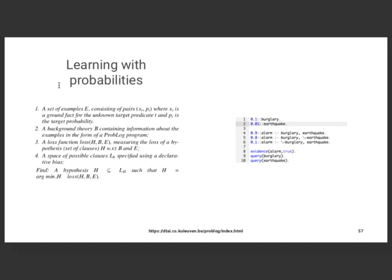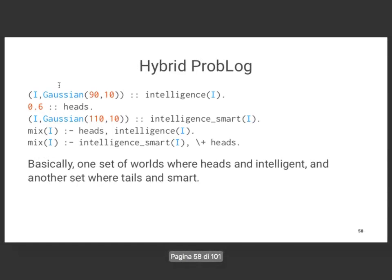Ideally you want to learn probabilities of atoms and rules — that's the holy grail to induce these kinds of programs. Can we do something regarding ILP for learning programs in continuous space? Let's look at a specific probabilistic logic programming paradigm and consider modeling continuous distributions. This is called a hybrid program. It captures a mixture: a 'normal intelligence' modeled as a Gaussian centered at 90, and 'smart intelligence' as a Gaussian centered at 110. A random coin toss with probability 0.6 for heads determines which mixture — heads gives intelligent students, tails gives really smart students.